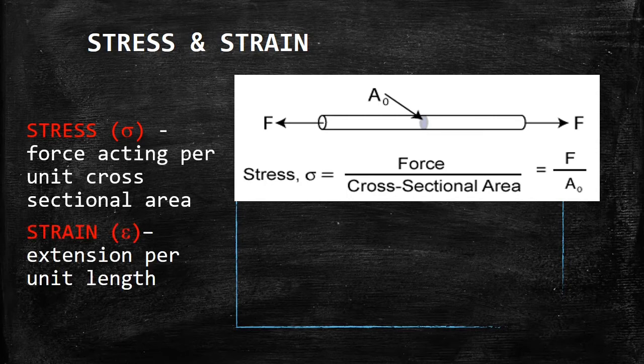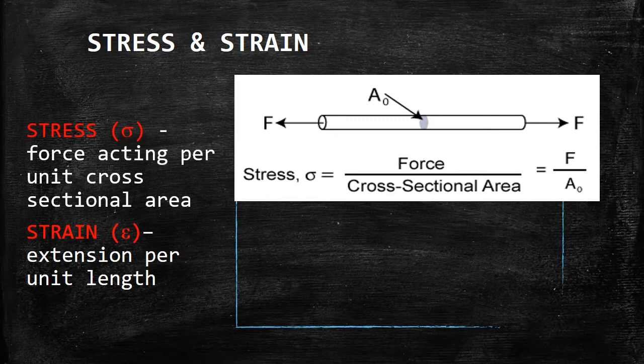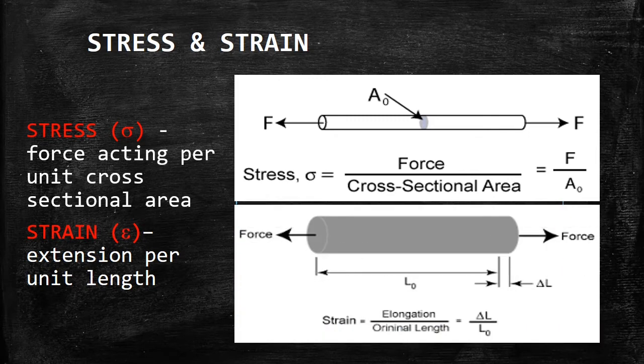Strain, symbolized as epsilon, on the other hand, is defined as extension per unit length. As seen in this picture, in response to the tensile force, the wire experiences elongation of delta L. Strain expressed in mathematical form is a ratio of elongation over original length, or delta L over L₀.